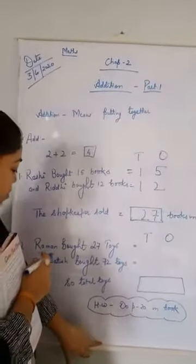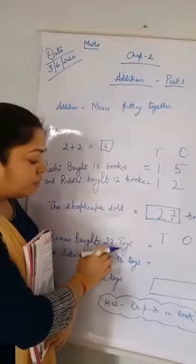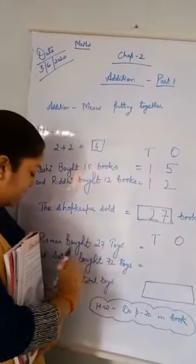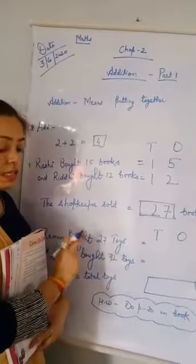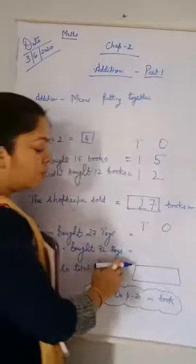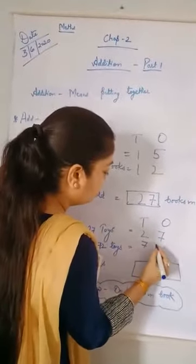So like this you will do the second question also. The second question is: Rambal bought 27 toys and Satish bought 72 toys. Okay, 72 toys kisne bought? Satish bought them. So you will write 27 and 72.